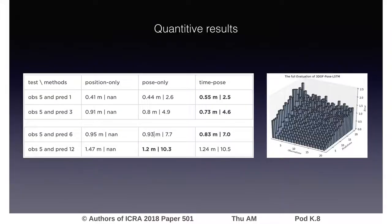Our approach utilizes the correlation between different sources of input and is able to predict more information without losing accuracy. For longer-term prediction, our learned model incorporates short-term observation and long-term spatiotemporal context, which makes longer-term prediction more accurate.